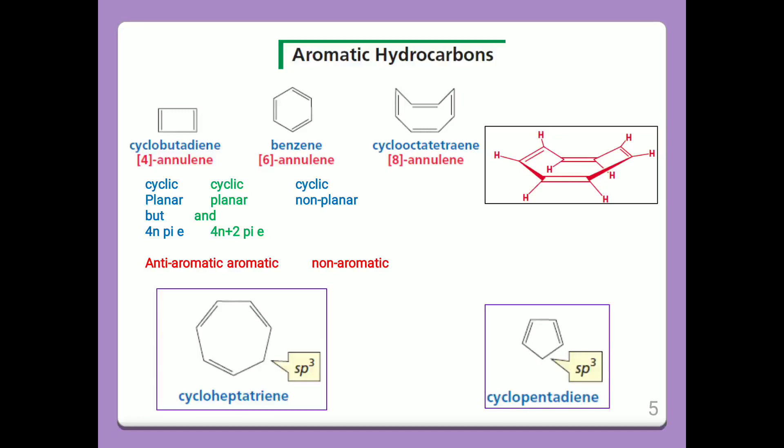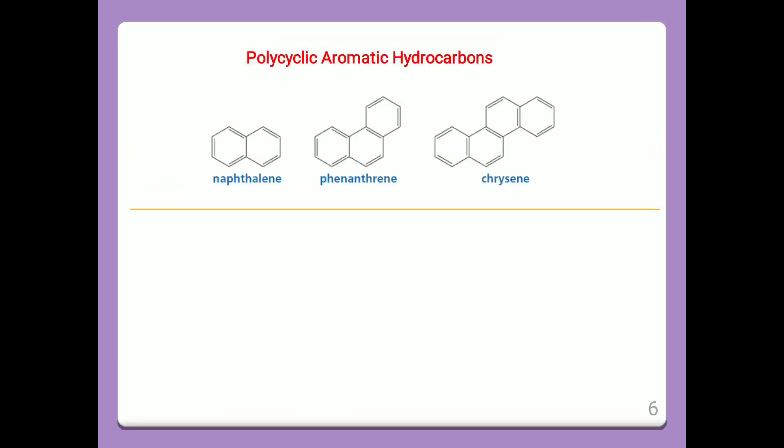So we have anti-aromatic, aromatic, and non-aromatic. Another example: cyclopentadiene, in which one of the carbons has sp3 hybridization. Because of that sp3 carbon, it is a non-aromatic compound.